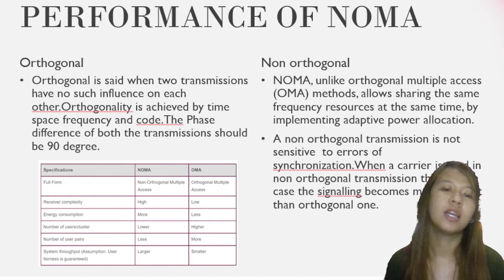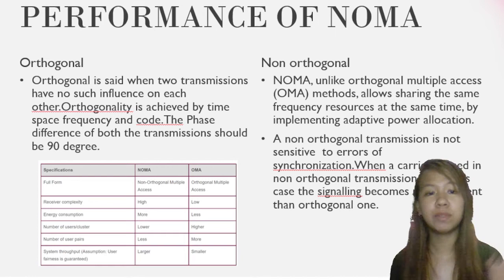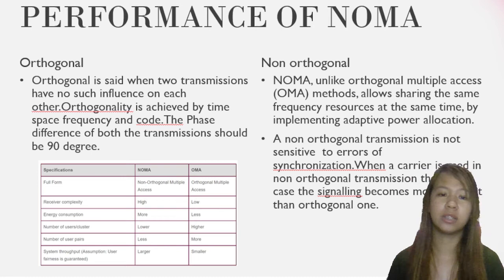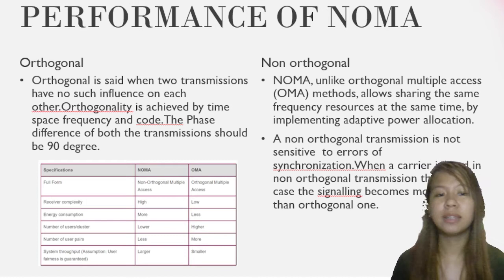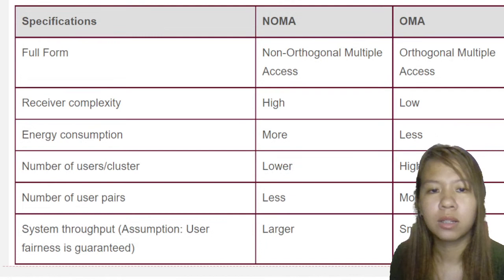In non-orthogonal — that is NOMA — unlike orthogonal, it allows multiple access as mentioned. It allows sharing the same frequency resource at the same time by implementing adaptive power allocation. A non-orthogonal transmission is not sensitive to errors of synchronization. When a carrier is used in non-orthogonal transmission, the signaling becomes more efficient than the orthogonal one. The picture below shows the contrast of NOMA and OMA.